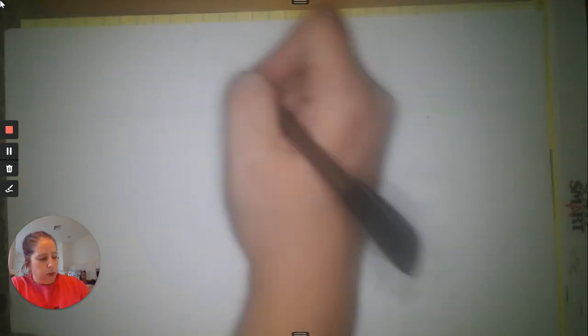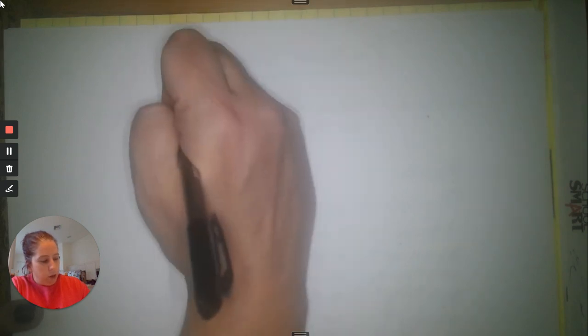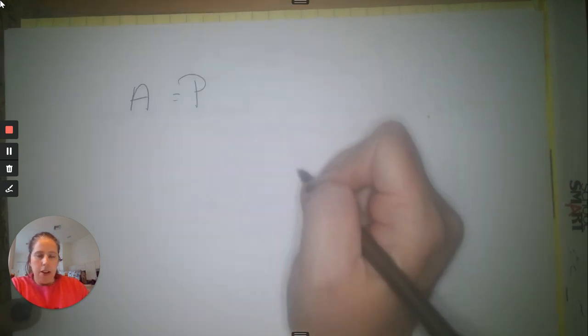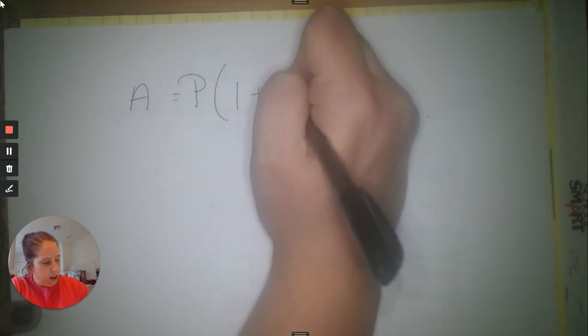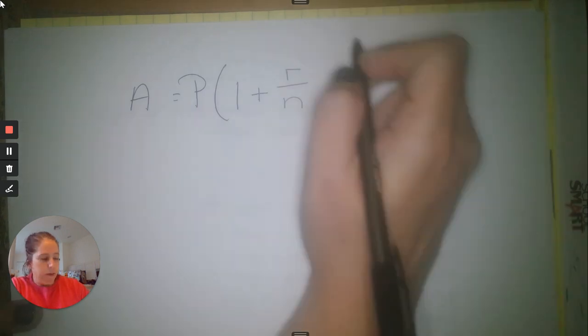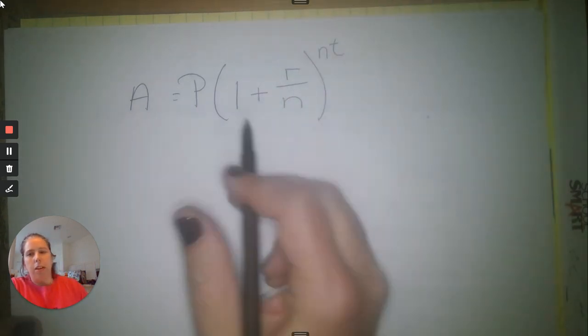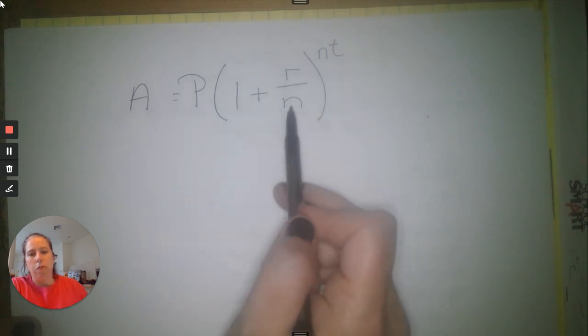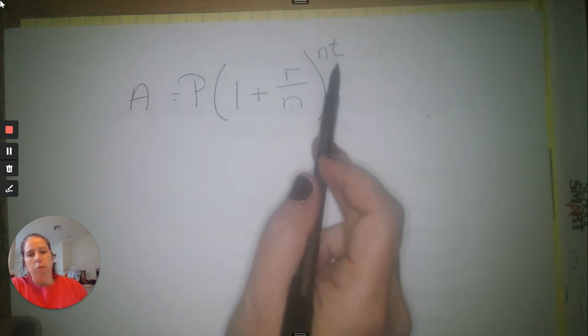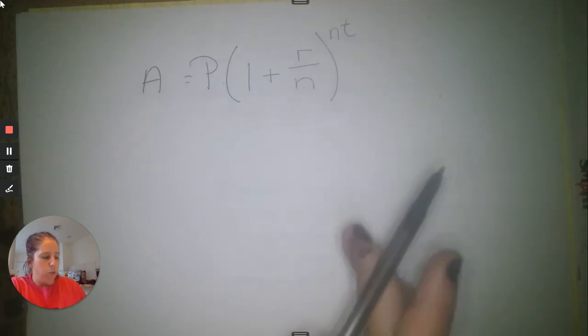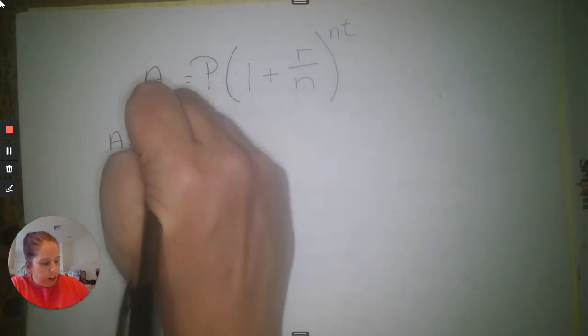Now here comes the important part — the formula. Make sure you write it down: A equals P times the quantity one plus r over n, raised to the n times t power. So: A = P(1 + r/n)^(nt). The variable A is your final amount.